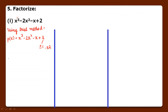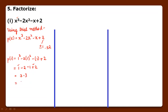The trial method says we will check one by one at which value the polynomial gives 0. First we check P(1): 1 cube minus 2 into 1 square minus 1 plus 2 = 1 minus 2 minus 1 plus 2 = plus 3 minus 3 = 0. Since at x=1 the polynomial value is 0, by the Factor Theorem, x minus 1 is a factor of P(x). First step is complete.